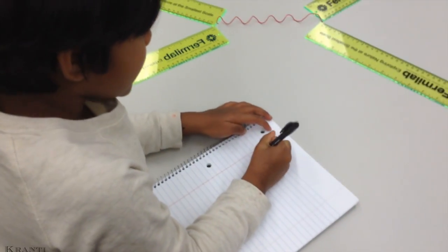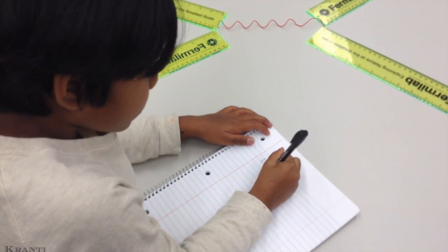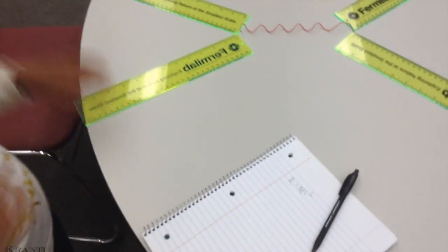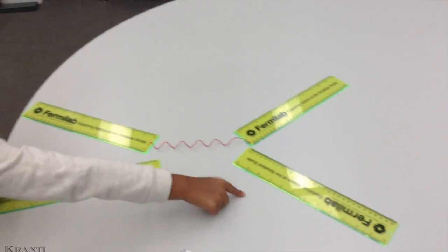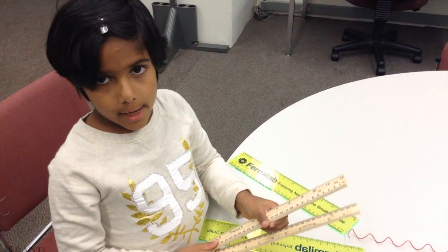Einstein's E equals mc squared. Matter becomes energy. Energy becomes matter.